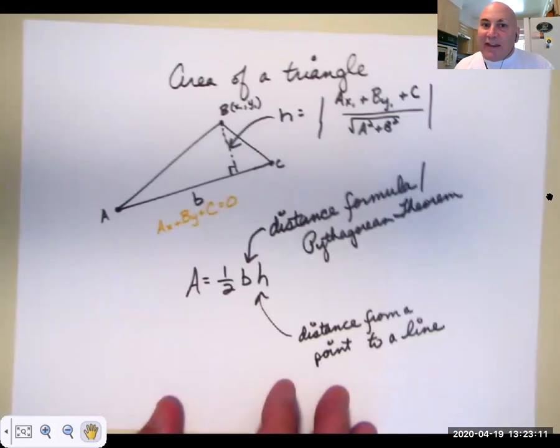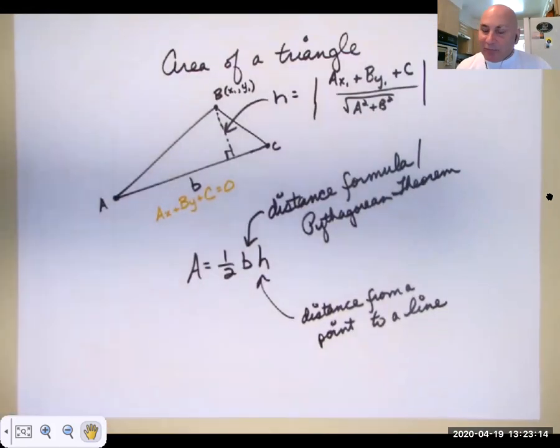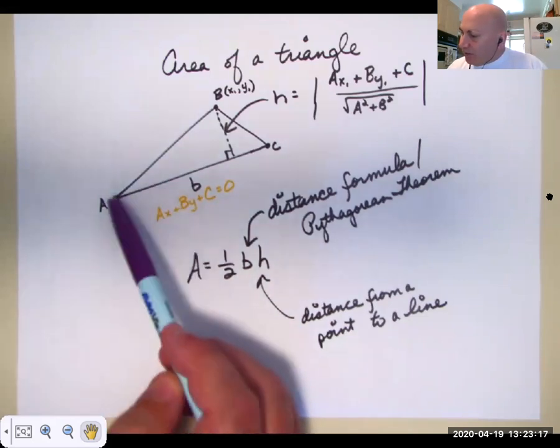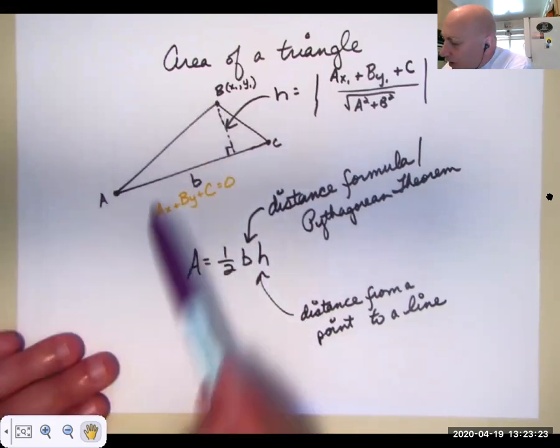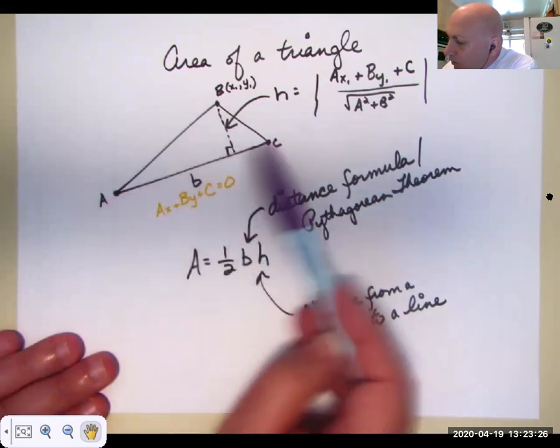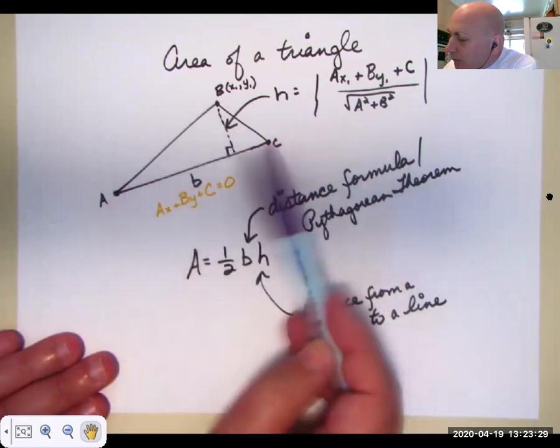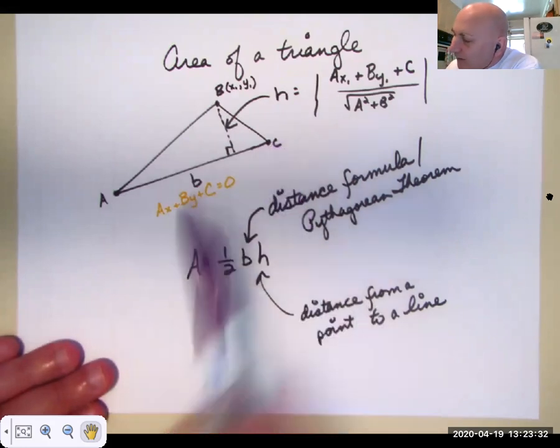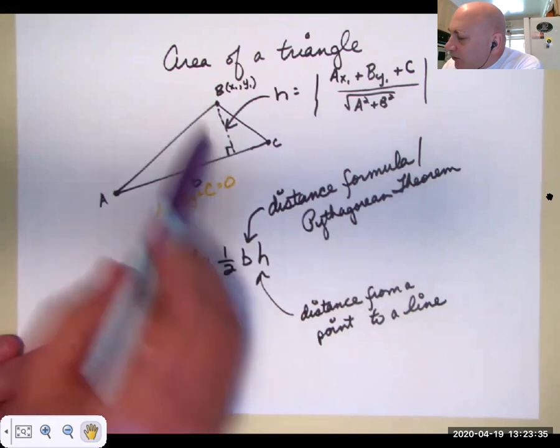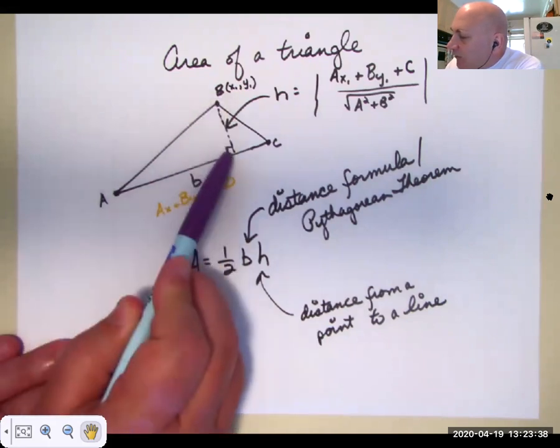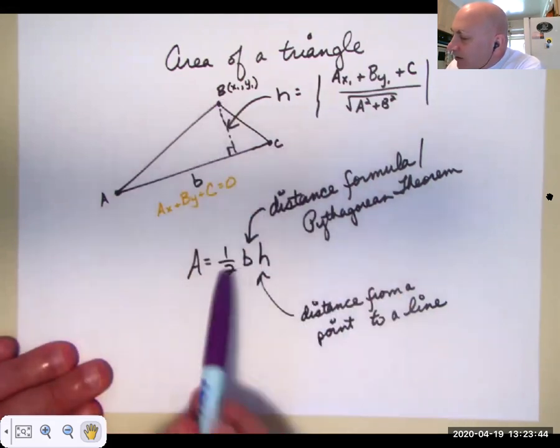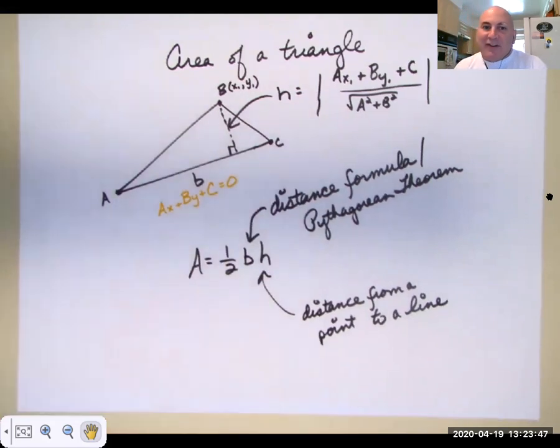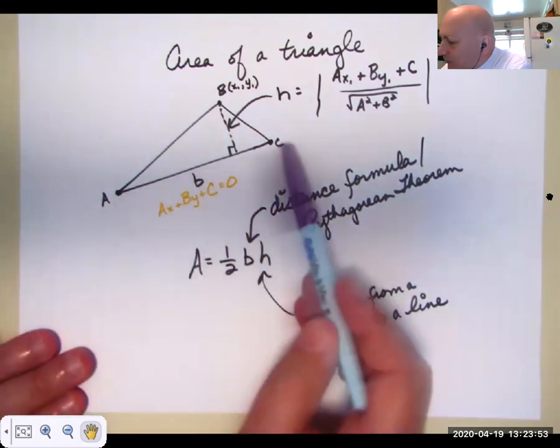We can therefore find the area of a triangle on a plane. If I'm given these three points of a triangle, I can find the equation of the line between these two points. And then I can find the perpendicular distance from this point to this line. I now have a base and a height, and I can multiply them by one half to get the area of the triangle. How do I get this base? Well, I use the distance formula.